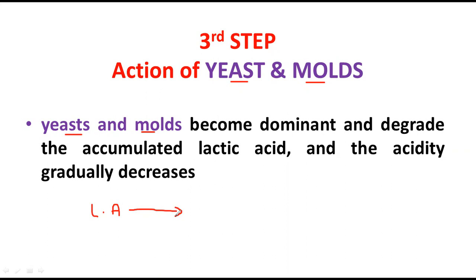What is known is that lactic acid can be hydrolyzed and converted into acetyl-CoA, but in milk specifically the exact reaction is still unclear. The key outcome of step three is that yeast and mold degrade the lactic acid, so the pH of the milk gradually increases — it was low due to lactic acid, and as lactic acid is degraded, pH rises. Eventually the pH becomes too high for yeast and mold to continue functioning.